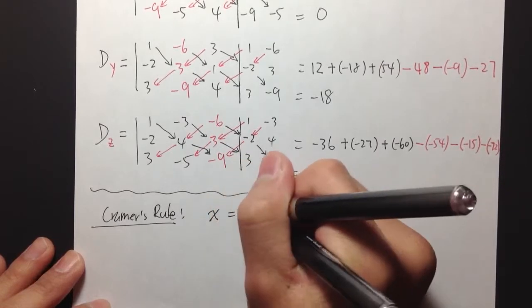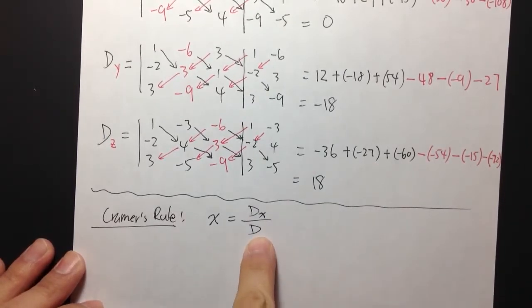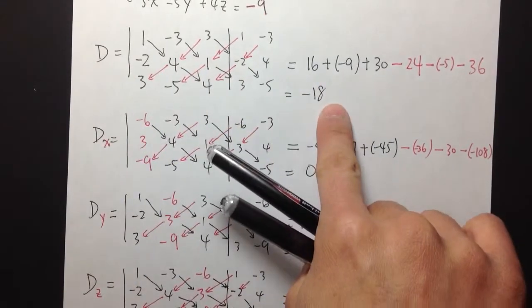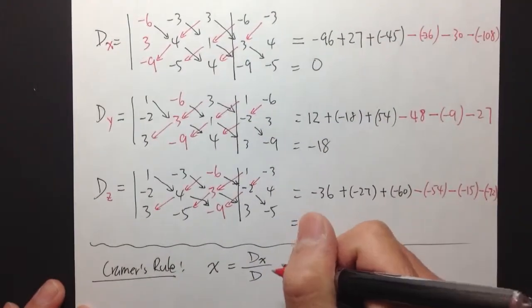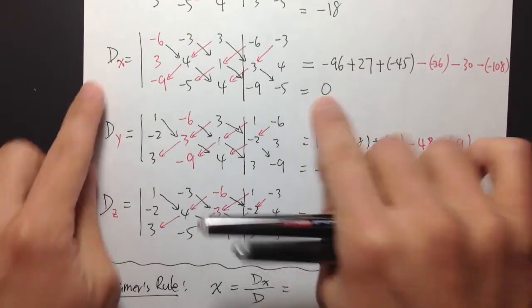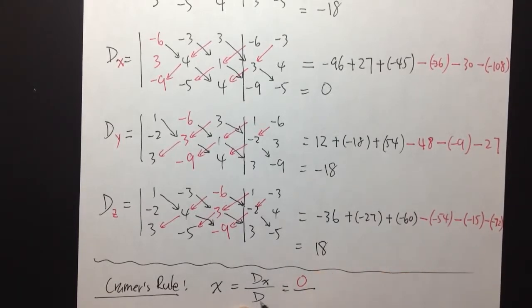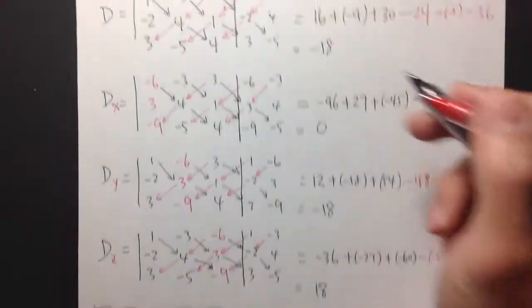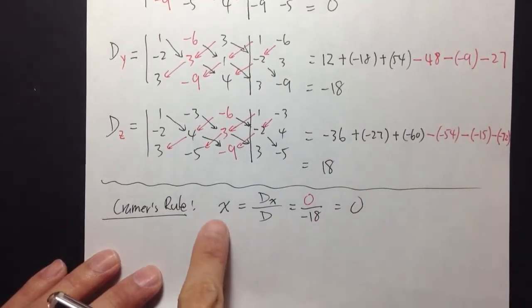x is equal to dx over d. You always put the determinant d in the denominator. The way to think about this is just think of d as for denominator. So this d is negative 18, and we're looking for dx, which is equal to 0. Put the dx, which is 0, on top. The d is the same for all three variables. d is negative 18. So 0 over negative 18 is, of course, 0. So x is equal to 0.